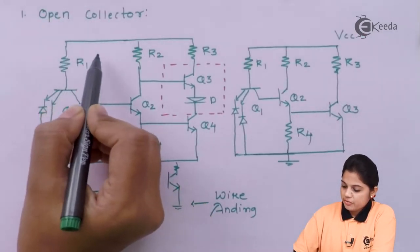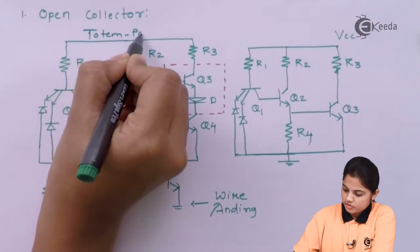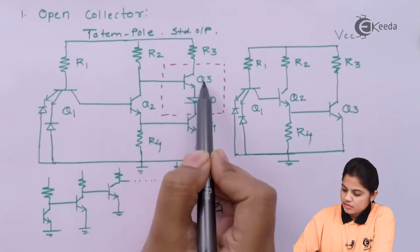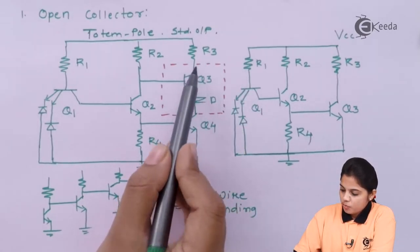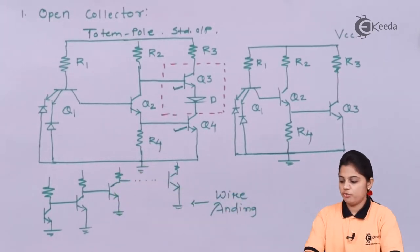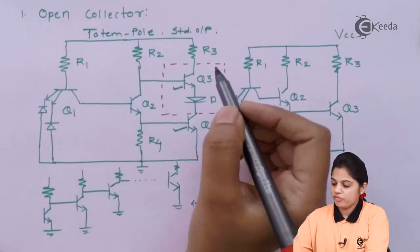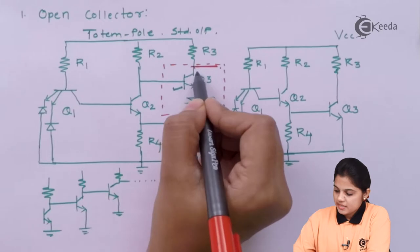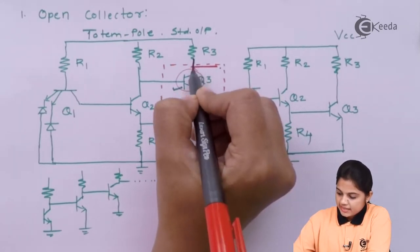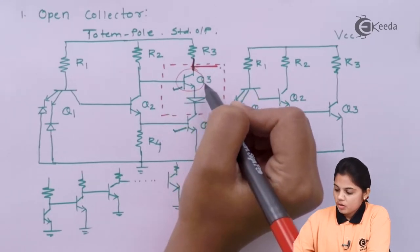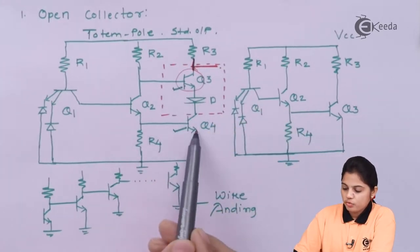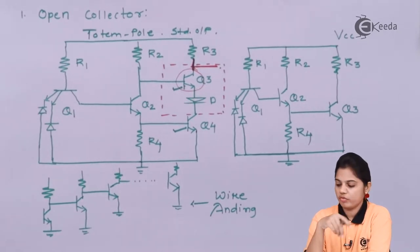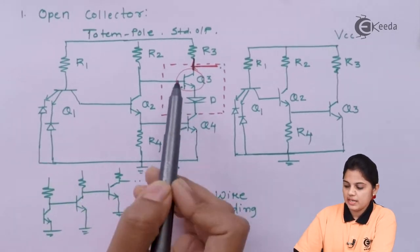This is the totem pole or standard output configuration. In this diagram I have made a block consisting of Q3 and a diode. At the output side you have transistor Q3 as well as transistor Q4. Now if you want to add one or more NAND gates to the output terminal, basically you are providing current, and since Q3 is connected there the current at that terminal will be controlled by transistor Q3. Q3 and Q4 will not both remain on at the same time — only one will be on and the other off.